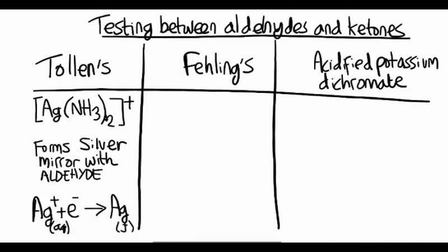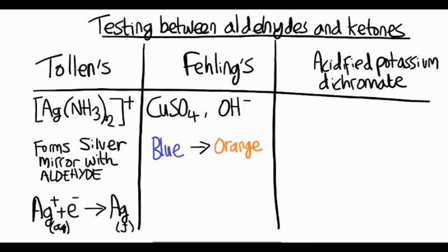Fehling solution contains copper 2 plus ions and a soluble hydroxide. When we react it with an aldehyde, it turns from a blue solution to a red-orange precipitate, and the reason for that is very similar to Tollens reagent.